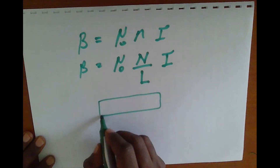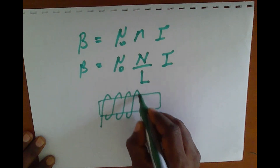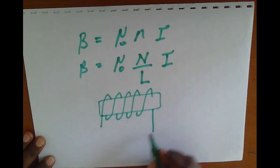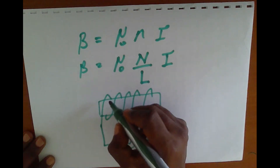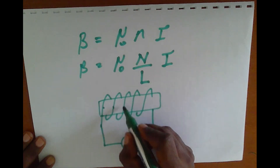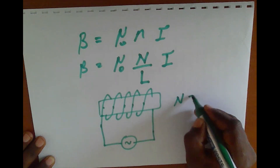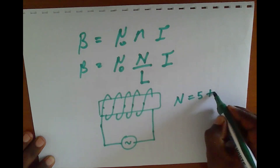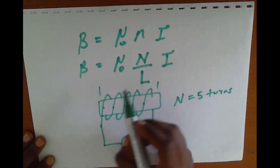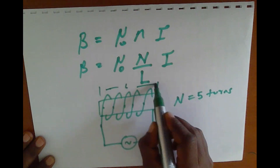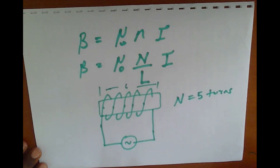So we have a solenoid like this one with a certain number of turns — one, two, three, four, five — so we have five turns. The length is from one end to the other. If the number of turns is increased, the magnetic field increases.